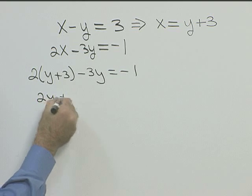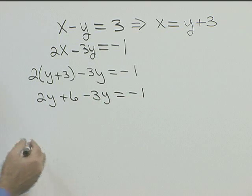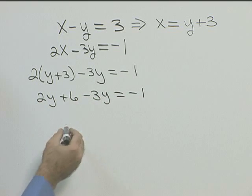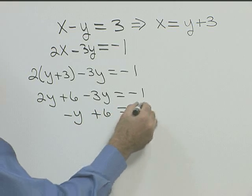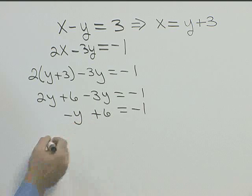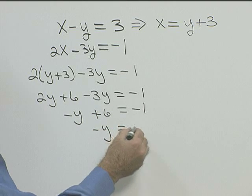Simplifying we get two y plus six minus three y equals negative one. Two y and negative three y will give us negative y plus six equals negative one. Now subtracting six from both sides we get negative y equals negative seven.